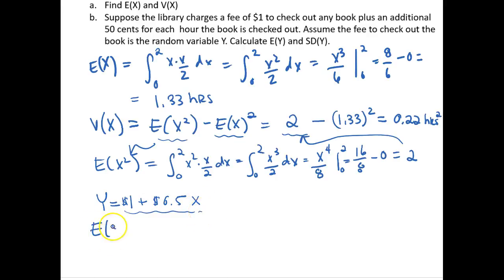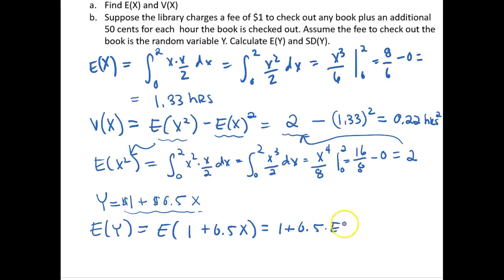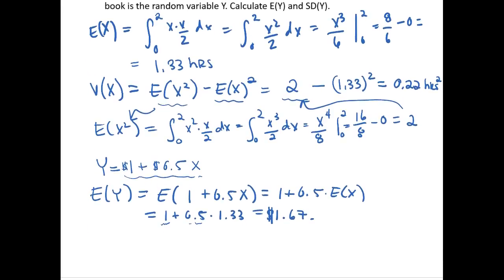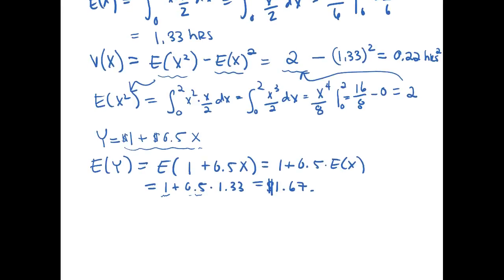We can easily find the expectation of y through the rules of linear combinations. E[y] = E[1 + 0.5x] = 1 + 0.5·E[x]. Since we found E[x] = 1.33, this equals 1 + 0.5·1.33 = 1.67. Note that the units are now dollars — the 1 is in dollars, 0.5 is dollars per hour, and x is in hours — so the expected fee is $1.67.